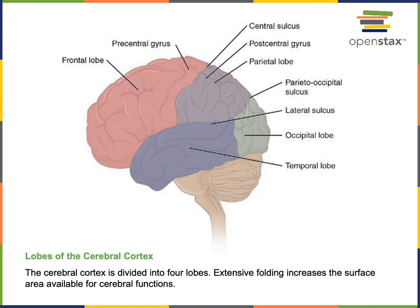The temporal lobes are shown in blue in the illustration. They are found just inferior to the frontal and parietal lobes, and the lateral sulcus separates the temporal lobes from the frontal and parietal lobes. The temporal lobes are important for processing auditory sensory information as well as olfactory sensory information — auditory refers to hearing and olfactory refers to the sense of smell. The temporal lobe is also important for processing and storing memories and emotions.